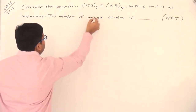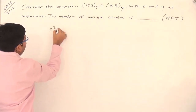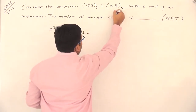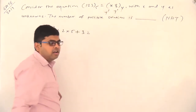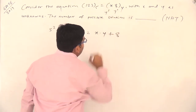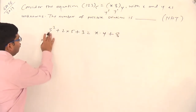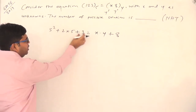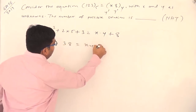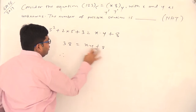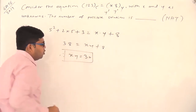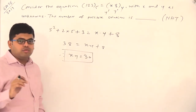Expand 123 in base 5: it will be 5 squared plus 2 multiplied by 5 plus 3. On the right side, the place values are y to the power 0 and y to the power 1, so it becomes x multiplied by y plus 8. Now 25 plus 10 is 35, plus 3 is 38. So 38 equals xy plus 8, and therefore x multiplied by y equals 30.